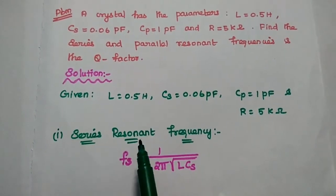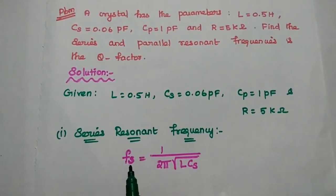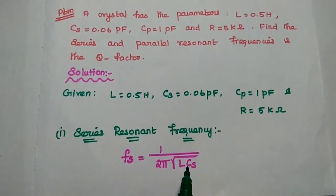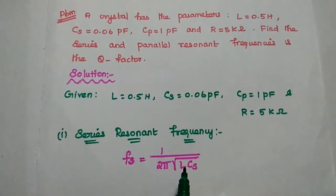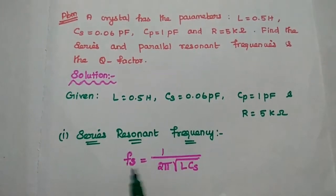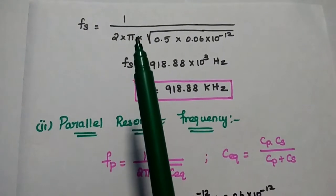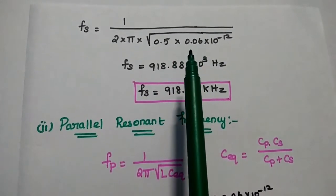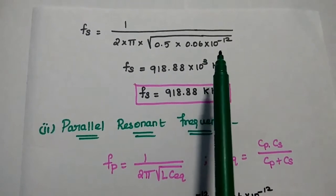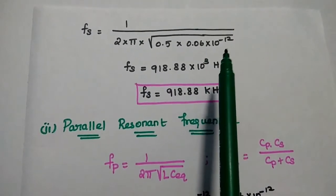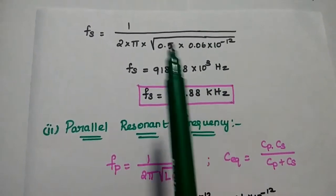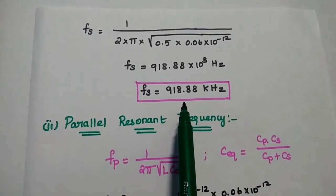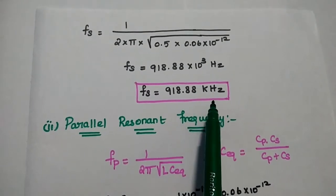The first one is series resonant frequency. The formula is Fs equal to 1 by 2 pi square root of L into Cs. Substituting the values: Fs is equal to 1 by 2 pi square root of 0.5 into 0.06 times 10 to the power minus 12 — since picofarad means 10 to the power minus 12. We get the series frequency value as 918.88 kilohertz.